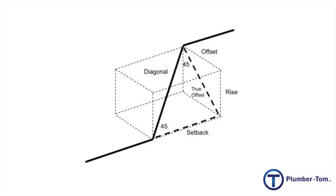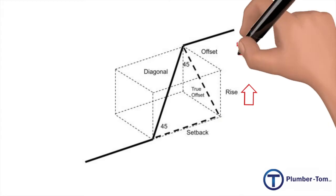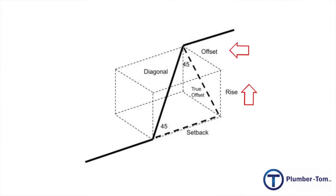There are very specific calculations involved with creating a rolling offset. In this video, we're going to talk about what is a rolling offset and how do you calculate that. A rolling offset differs from a regular offset in that it moves in two directions — up and over — or what we call the rise and the offset.